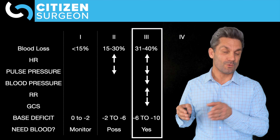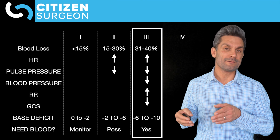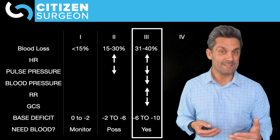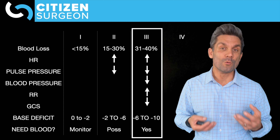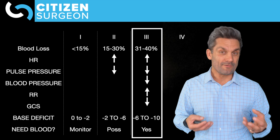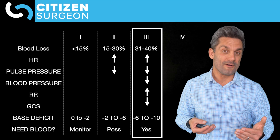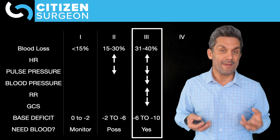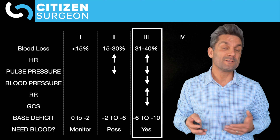Stage 3 shock is 31 to 40% blood loss. The patient is now showing serious signs of illness. Tachycardia is climbing high. Pulse pressure is narrowed. Mean arterial pressure is now decreased. Respiratory rate is elevated. Lack of organ perfusion develops, metabolic acidosis begins, and the respiratory system tries to compensate with shallow, rapid breathing. GCS starts to fall. Base deficit is increasing, typically between 6 and 10.